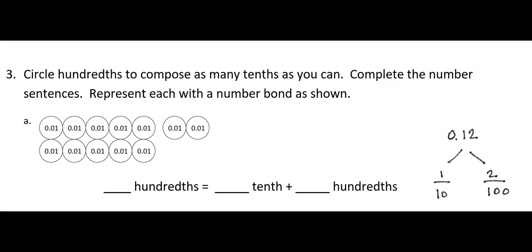In the next section, I have place value disks that are hundredths, and I'm going to use as many of those as I can to make tenths. It takes 10 hundredths to make 1 tenth. So I'm going to circle 10 of these, which would then be equal to 1 tenth.